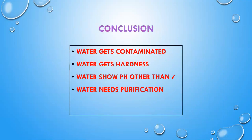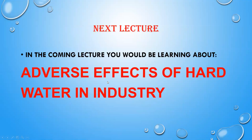In conclusion, the hydrological cycle presents numerous stages where water gets contaminated. Due to this contamination, water acquires hardness and a pH other than 7, and hence such water needs purification. That's all for today's session; in our coming lecture we will be discussing the adverse effects of hard water in industry. Thank you.